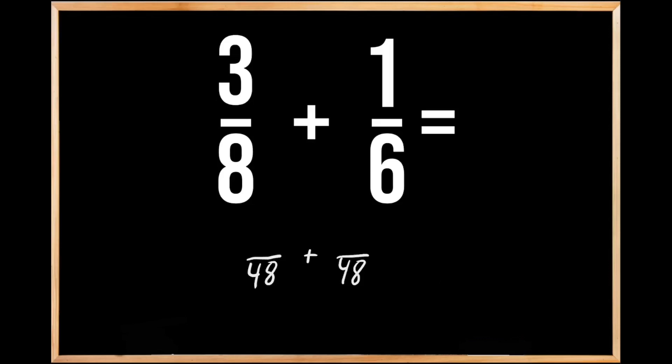For the first fraction, we had to multiply our denominator of 8 by 6 to get 48. So we're going to do the same thing to our numerator. When we multiply 3 times 6, we get 18 for the fraction of 18/48.